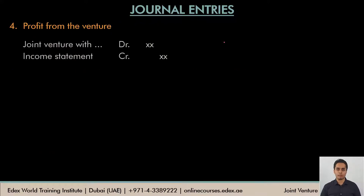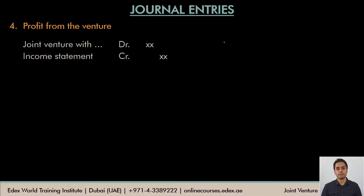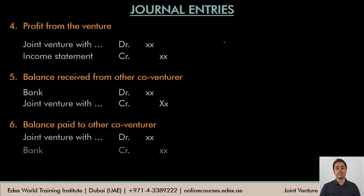Once we've prepared a memorandum joint venture account and the venturers have earned a profit, that profit would be recorded by debiting the joint venture account and crediting the income statement. It makes sense to debit the joint venture account because this profit is to be recovered or collected by the co-venturer. The balance in the joint venture account will then either be receivable from other venturers or payable to other venturers.